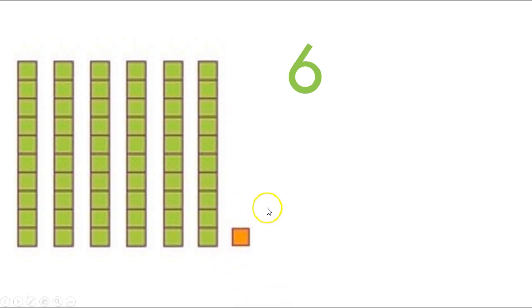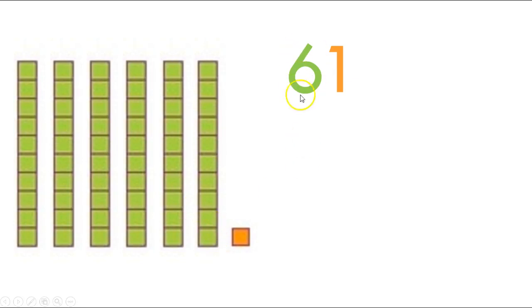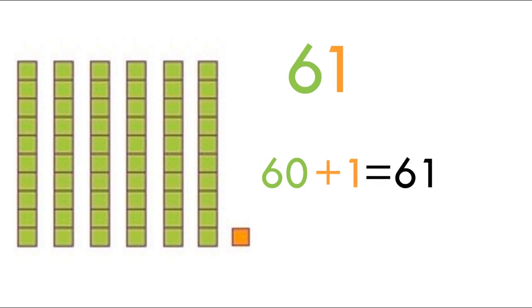Now let's count how many ones there are. This is pretty simple — it looks like there's only one. So there should be one in the ones place. Did you put the one in the ones place and the six in the tens place? If you did, give yourself a kiss on the brain. Excellent job. Now write the number sentence. Push pause if you need to, then push play when you're done. So how many tens did we have? Six tens, so that means we have 60 plus how many ones? One. So 60 plus one equals 61.